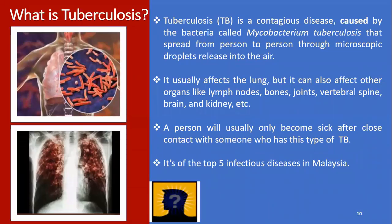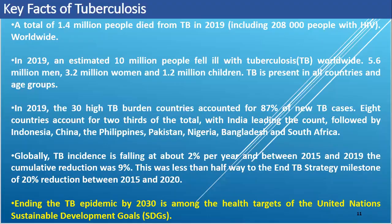What is tuberculosis? Tuberculosis is an infectious disease caused by a type of bacteria. Here are the key facts of TB. In 2019, a total of 1.4 million people died from TB. In the same year, around 10 million people fell ill with TB. Most of them are men, followed by women and children.